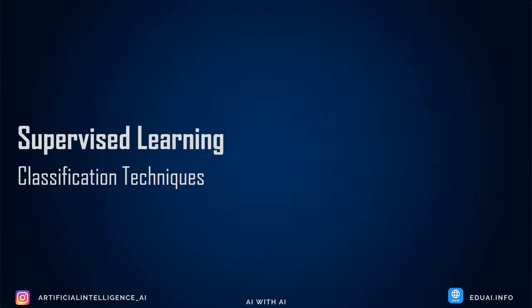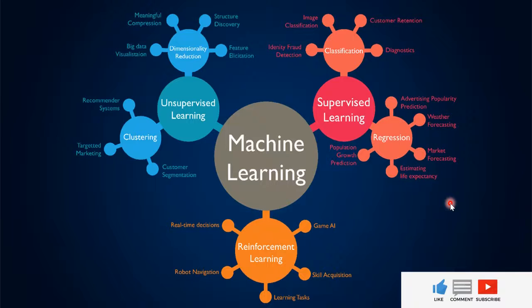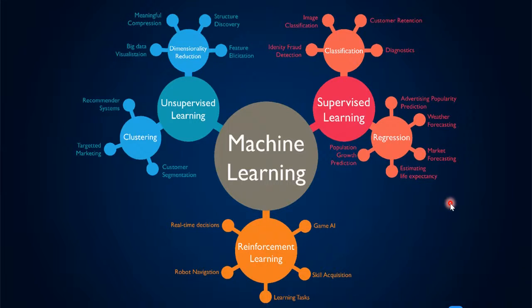If you remember, we have already discussed machine learning and its different types in the previous videos. If not watched, please go and watch those videos first. We have already seen different types of machine learning algorithms and discussed linear regression and its different types in detail. If not watched those videos on linear regression, I urge you to watch them first in the series. I'll put the link in the description and in the I button.